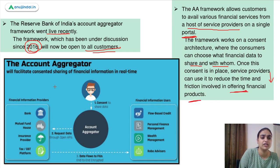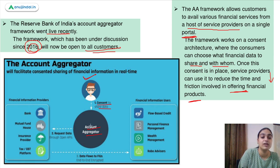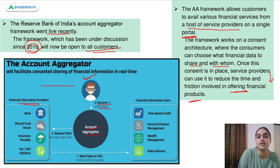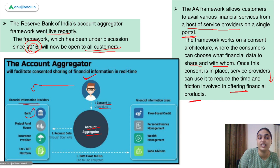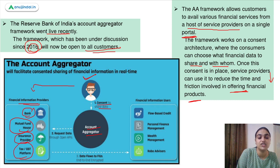This image shows the same thing discussed. There is the customer who will provide consent as to what information he is willing to share. The account aggregator, which can be any company, will request data from financial information providers based on what the customer is willing to share. The customer's data can be held by a bank where his account is, a mutual fund house, an insurance provider, or a tax or GST platform — these are the financial information providers.